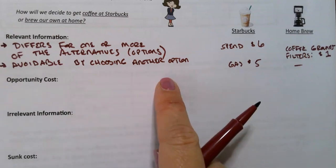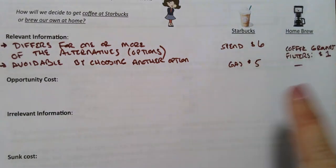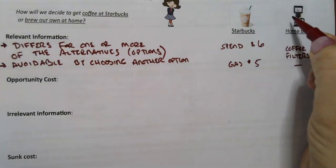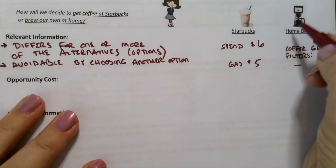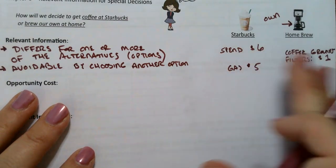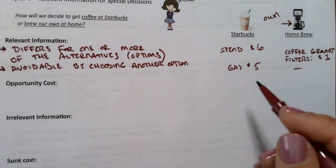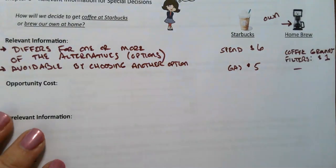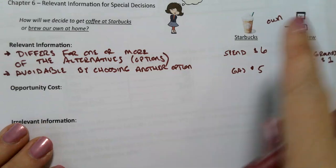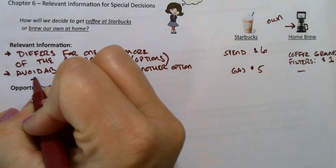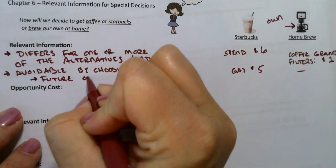Things that are avoidable are going to be focused on the future — we have not spent money on these things yet. For example, what if you already have a coffee maker at home? It doesn't matter if you go to Starbucks or stay home — you still own the coffee maker. That doesn't differ between options. It was purchased in the past; it's not a future-oriented thing. What happens in the past stays in the past. Relevant information is always future-oriented.